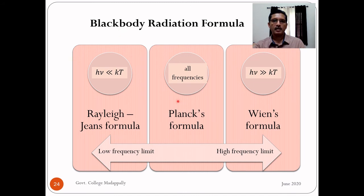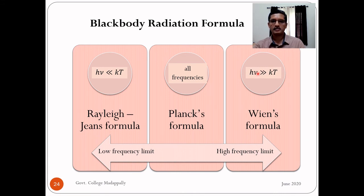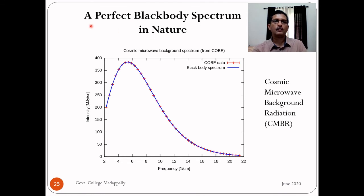In summary: Planck's radiation formula is applicable at all frequencies. In the low frequency limit (hν << kT), it reduces to the Rayleigh-Jeans formula. In the high frequency limit (hν >> kT), it reduces to Wien's formula.